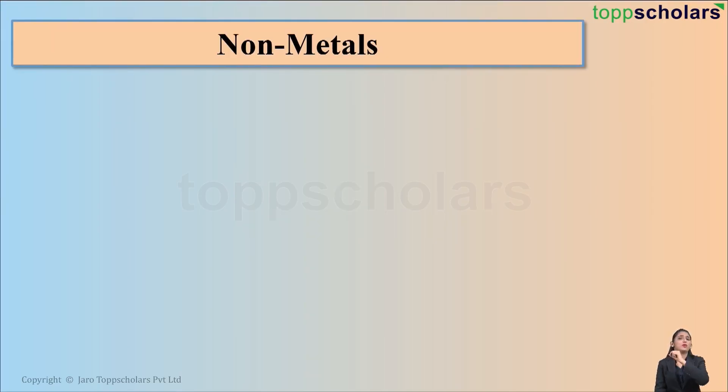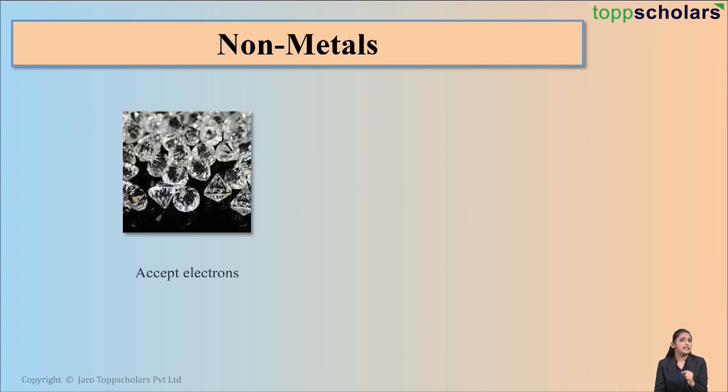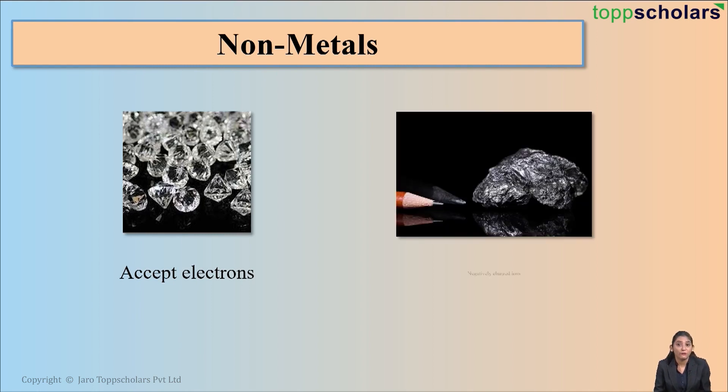So now, friends, let's talk about non-metals first. Non-metals generally have a tendency to accept electrons. In order to become stable, non-metals accept electrons. And when these non-metals accept electrons, they form negatively charged ions.